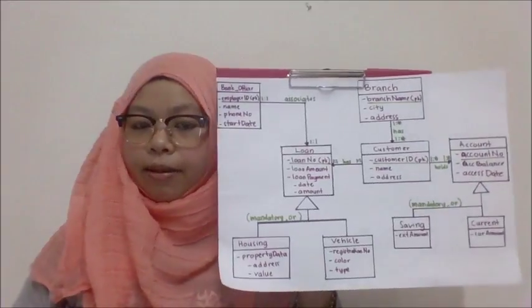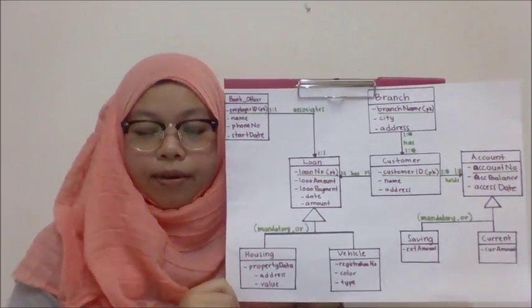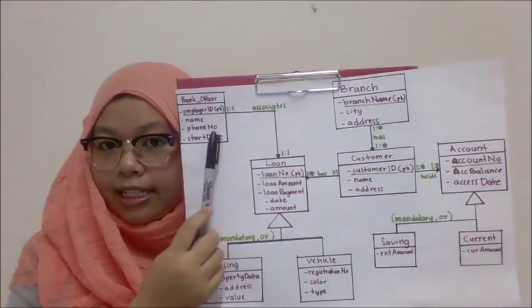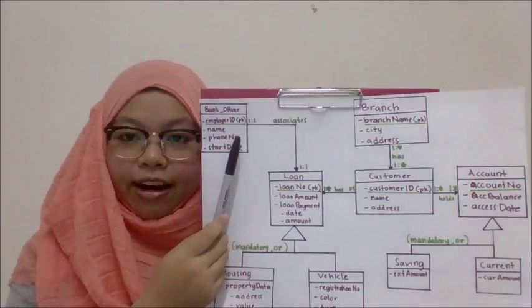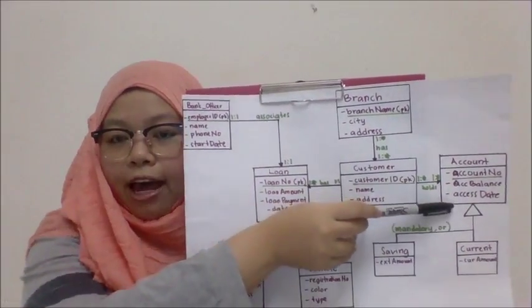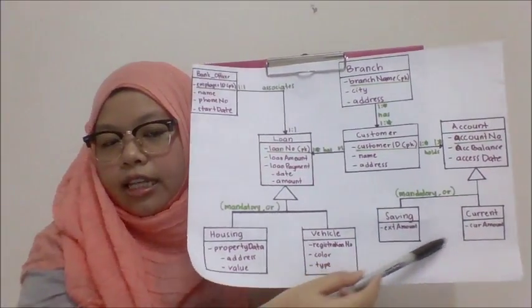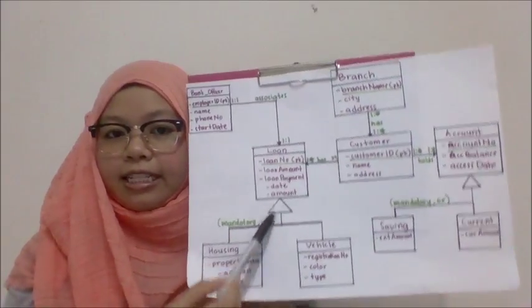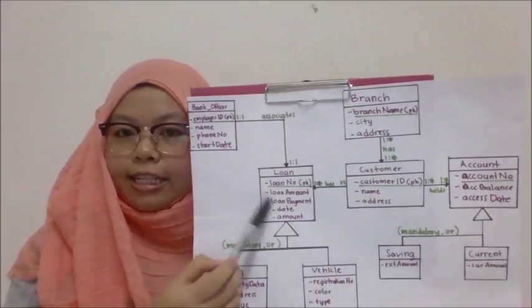This is the complete ER diagram that I have drawn based on the entities that I found. As you can see, there are five entities. You can also see the subclasses — there are four subclasses for each of these superclass entities.